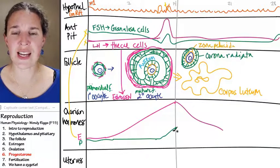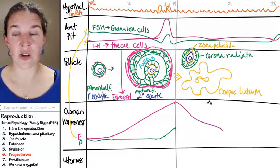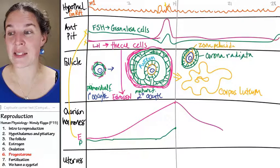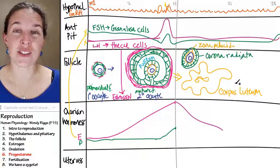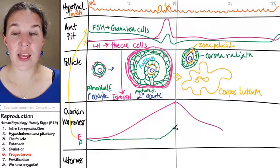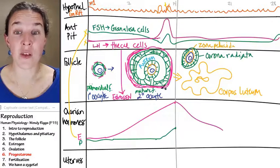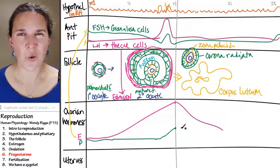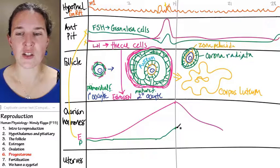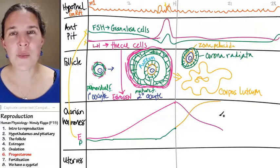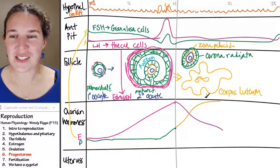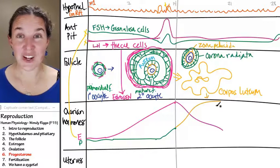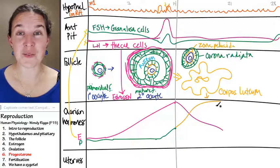However, who's this guy again? Progesterone. And look at what happens. I'm changing progesterone's color. I started with it as green because I was showing you that the granulosa cells started to produce progesterone toward ovulation. Guess who takes over the job and takes it over with gusto? The corpus luteum. The corpus luteum suddenly starts producing mad progesterone.